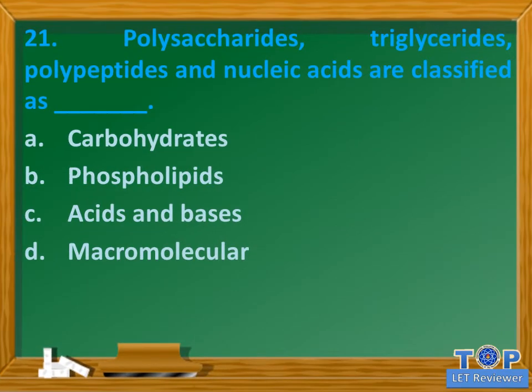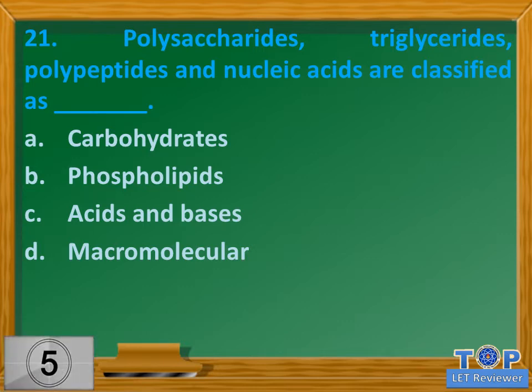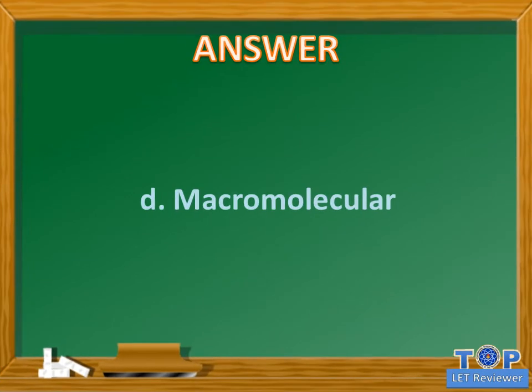Question number 21. Polysaccharides, triglycerides, polypeptides and nucleic acids are classified as blank. A. Carbohydrates. B. Phospholipids. C. Acids and bases. D. Macromolecular. Answer: D. Macromolecular.